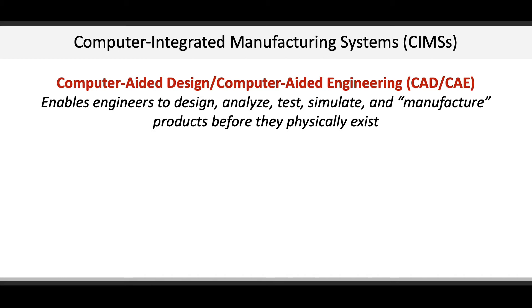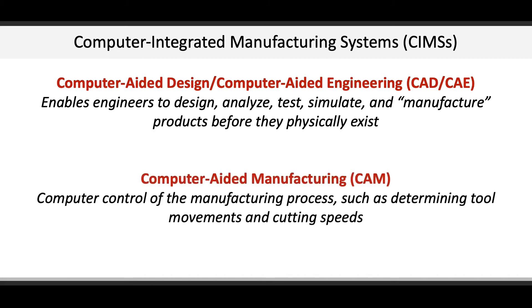CIMS can also include computer-aided manufacturing, which is based on computer control of the manufacturing process itself. A system like this works in determining tool movements and cutting speeds. An example of this could be automated cutting and routing tools in a mill workshop.